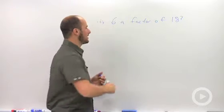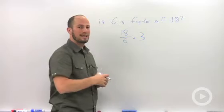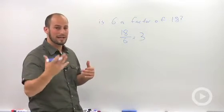Mathematically, what you're actually doing is 18 divided by 6 equals 3. There is no remainder, so therefore it is a factor.